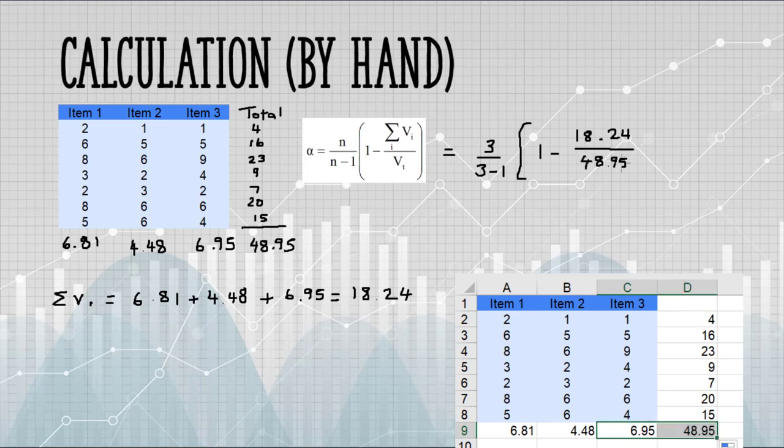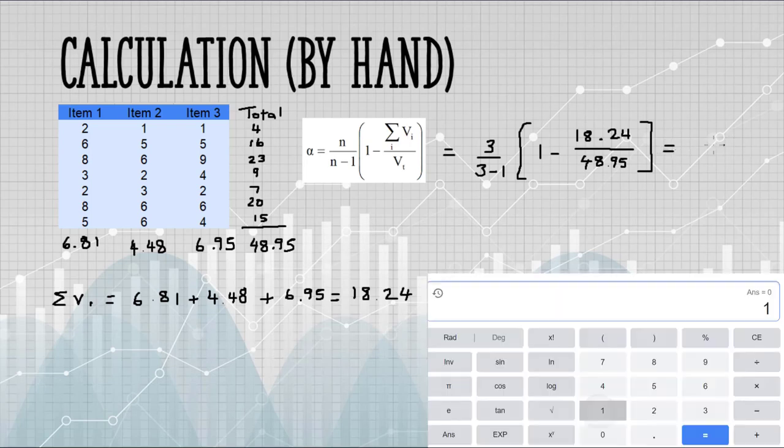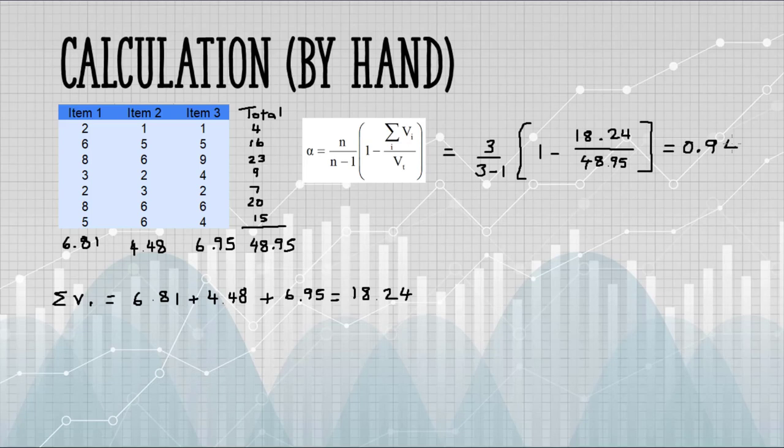And I can find the sample variance in the same way I did before with Excel. I get 48.95. And that goes into the denominator. When I work this out on a calculator, I get 0.94, which means our test items are highly intercorrelated.